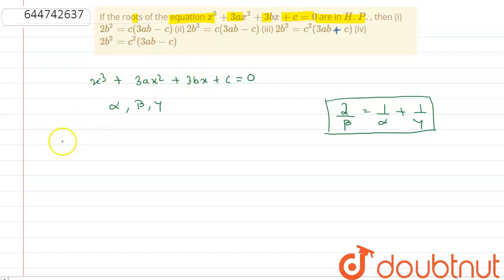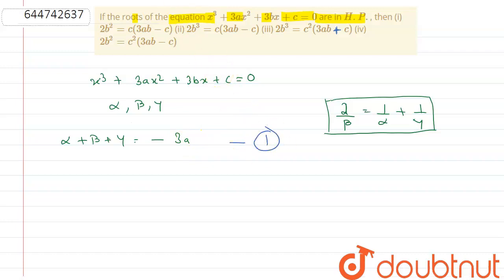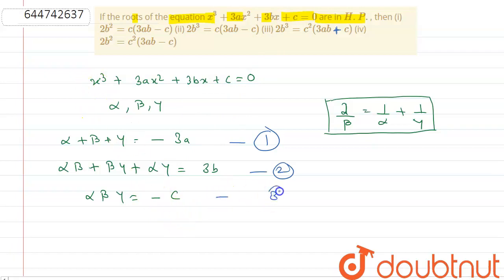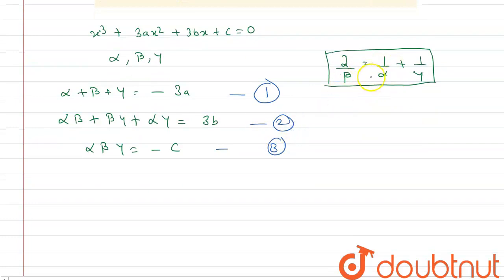From this equation, the sum of roots gives us α + β + γ = −b/a, where b is 3a and a is 1. Next, αβ + βγ + αγ = c/a, where c is 3b and a is 1. And the product of roots: αβγ = −d/a, where d is the constant c and a is 1.